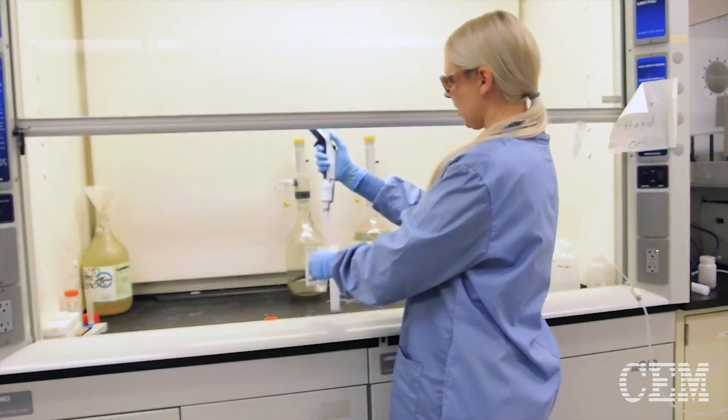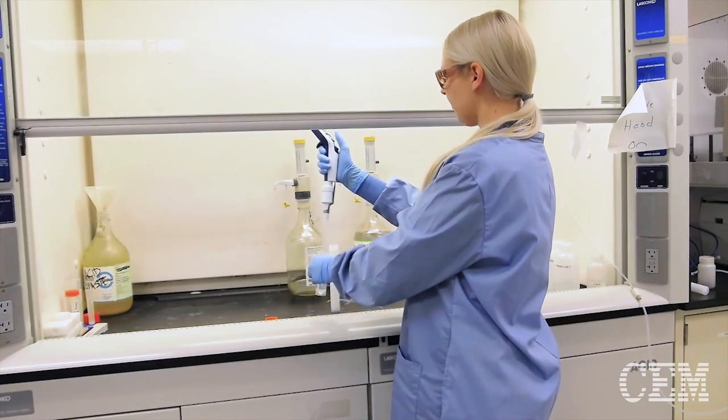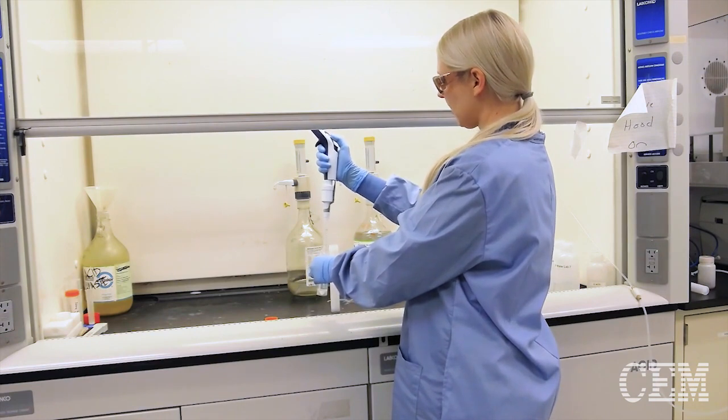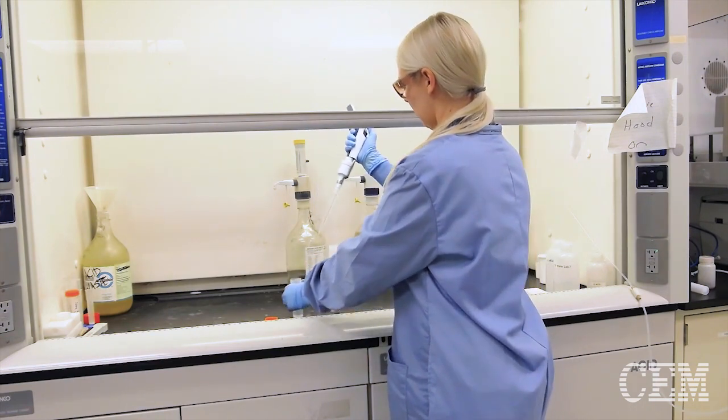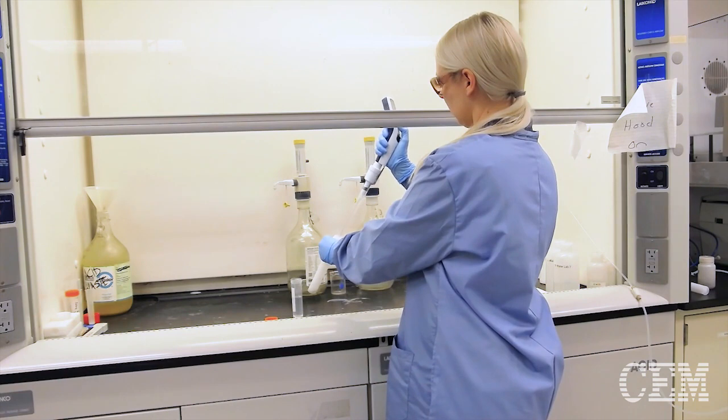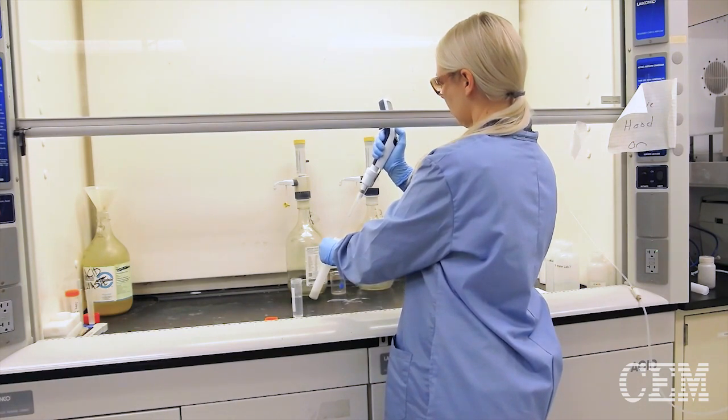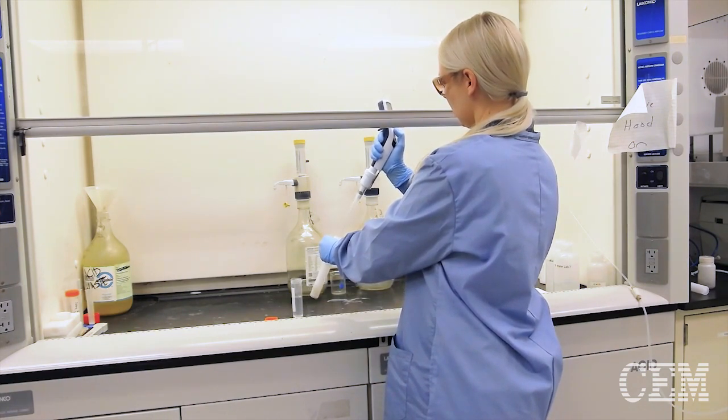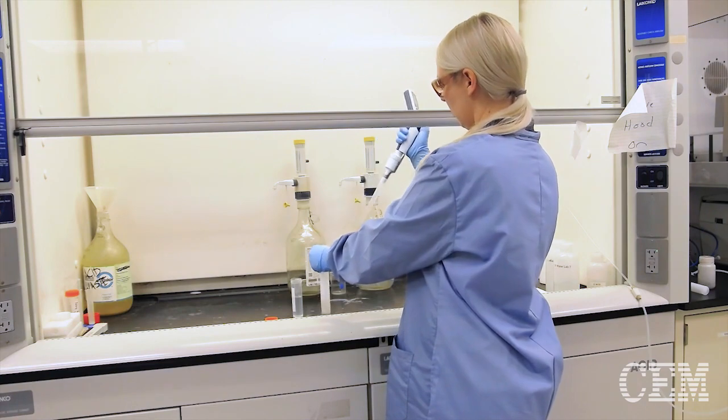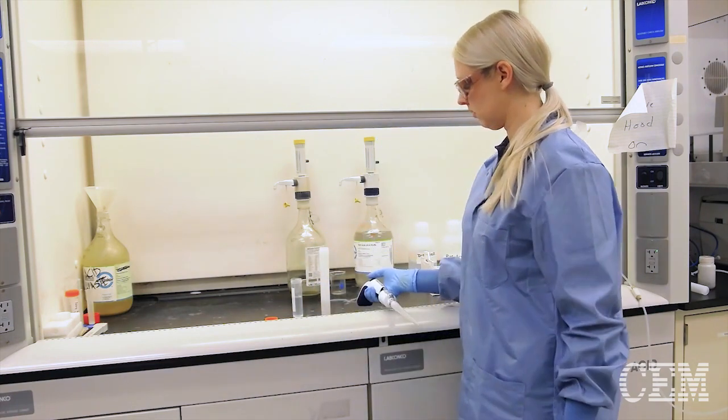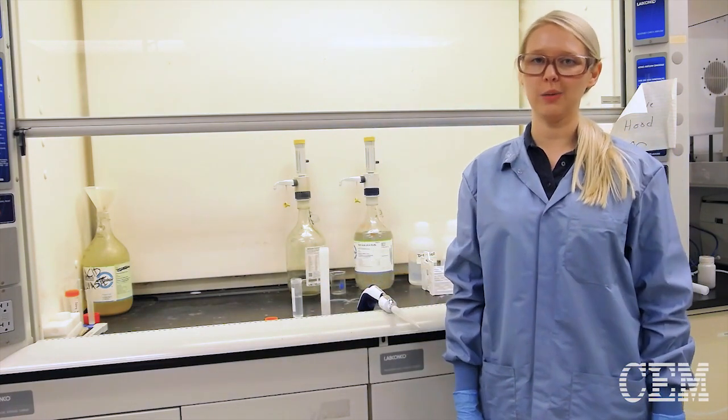You take your automatic pipette, get your acid, tilt your vessel, and just swirl around to make sure you're getting every angle of the sidewall to get the sample down to the bottom.